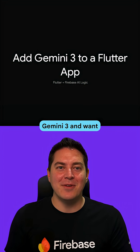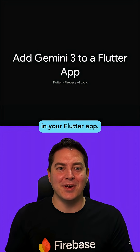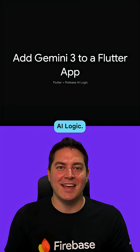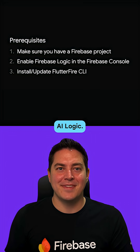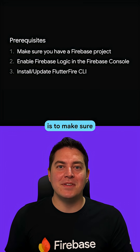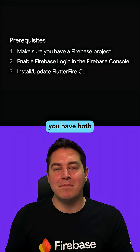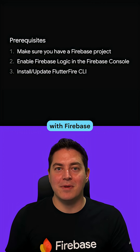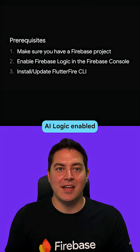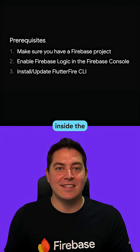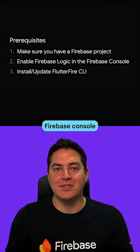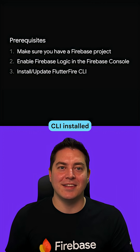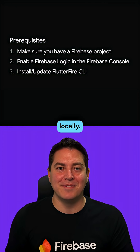Heard about Gemini 3 and want to use it in your Flutter app? We can do this with Firebase AI Logic. The first step is to make sure you have both a Firebase project with Firebase AI Logic enabled inside the Firebase console and the FlutterFire CLI installed locally.